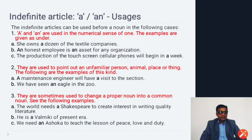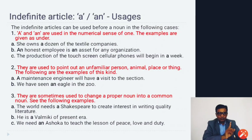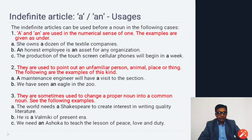For example, if I want a pen from you, I will say 'Please give me a pen.' Here 'a' means one. So 'a' and 'an' can indicate the number one. The second use: 'a' and 'an' are used to point out an unfamiliar person, animal, place, or thing. Examples: 'A maintenance engineer will have a visit to the section,' 'We have seen an eagle in the zoo.'